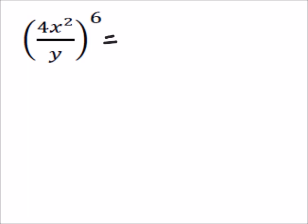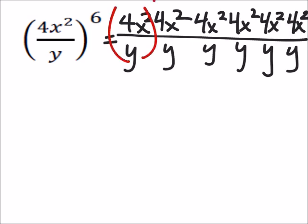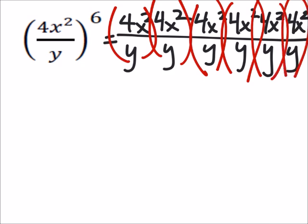So out of this, in the numerator, I'd have six of these four x squareds. One, two, we can have a lot of these. Alright, so that's what we have. There we go.